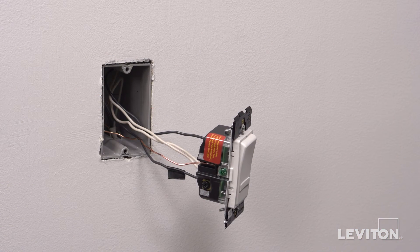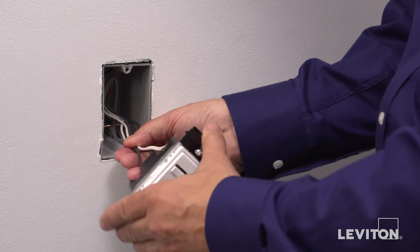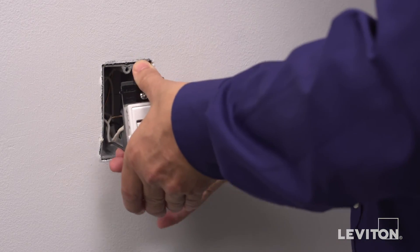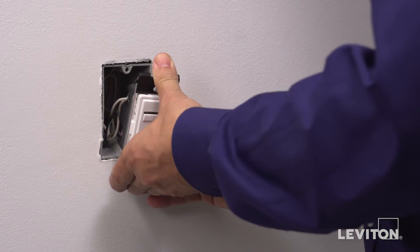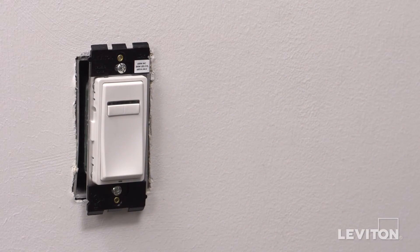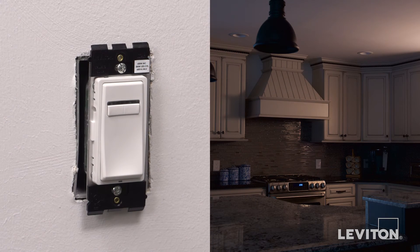Now that everything is wired, we'll test the device prior to fully mounting in the wallbox. Gently bend the wires and push them into the wallbox. Partially screw in the mounting screws in the wallbox mounting holes. Restore power at the circuit breaker. The status light on the device will turn white.